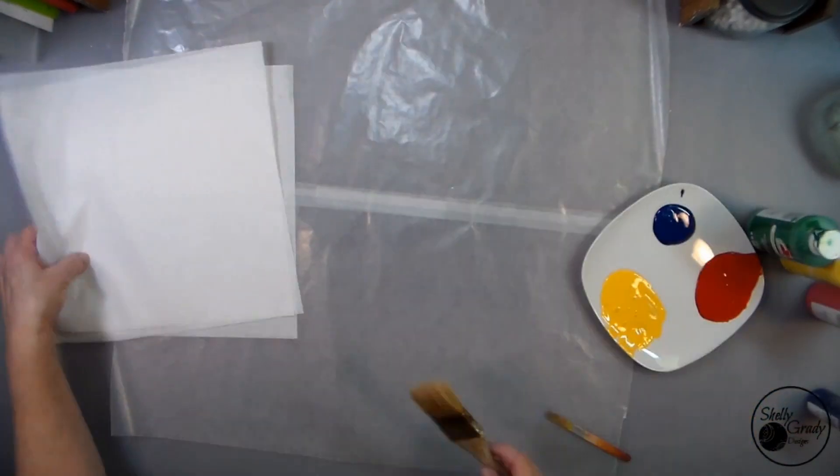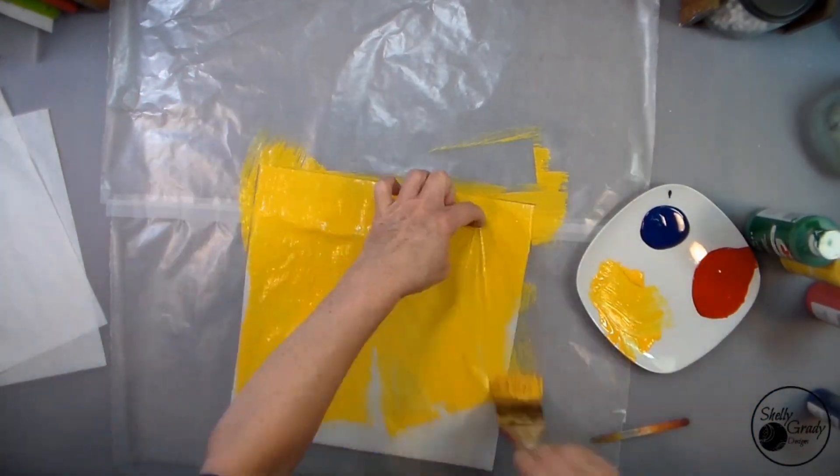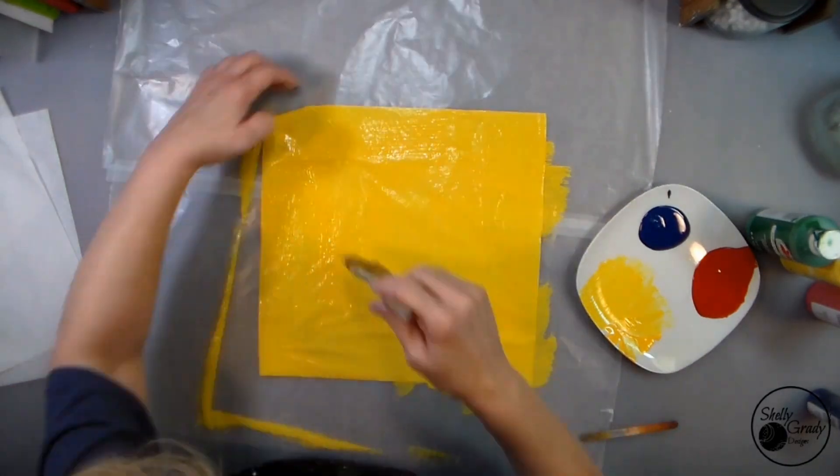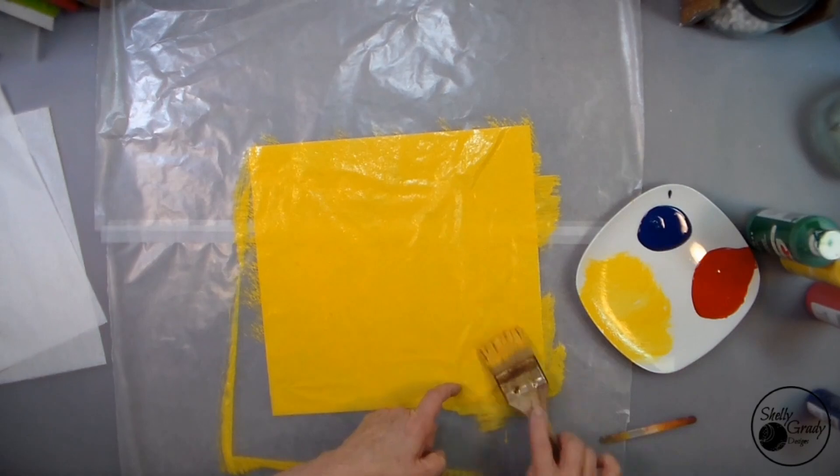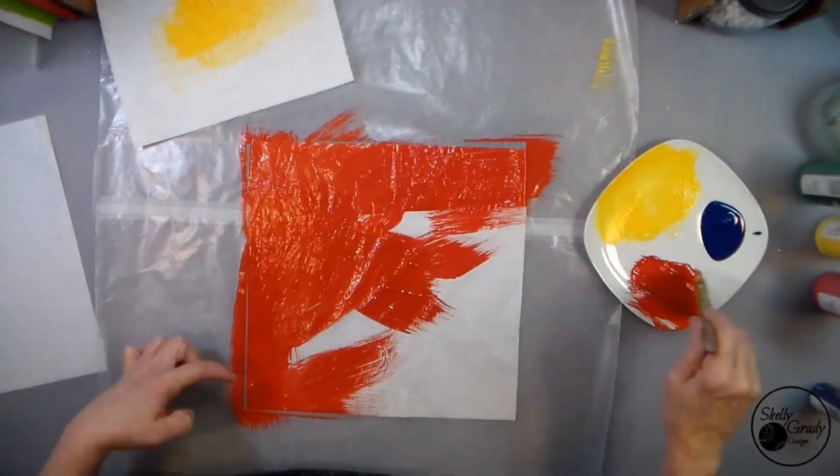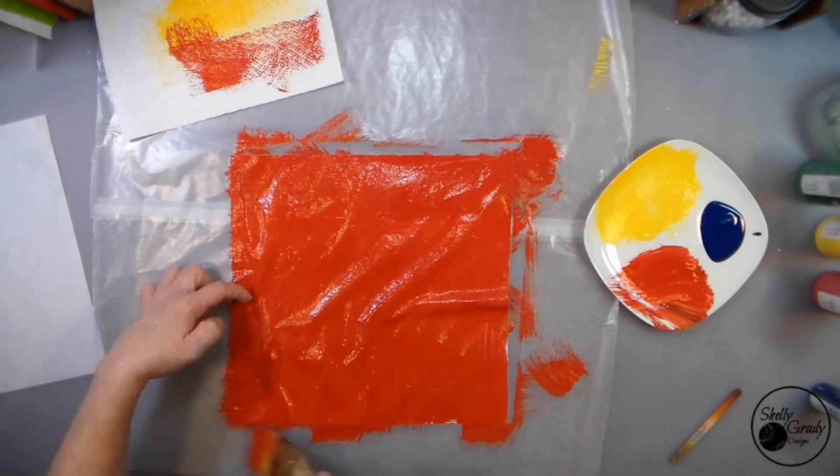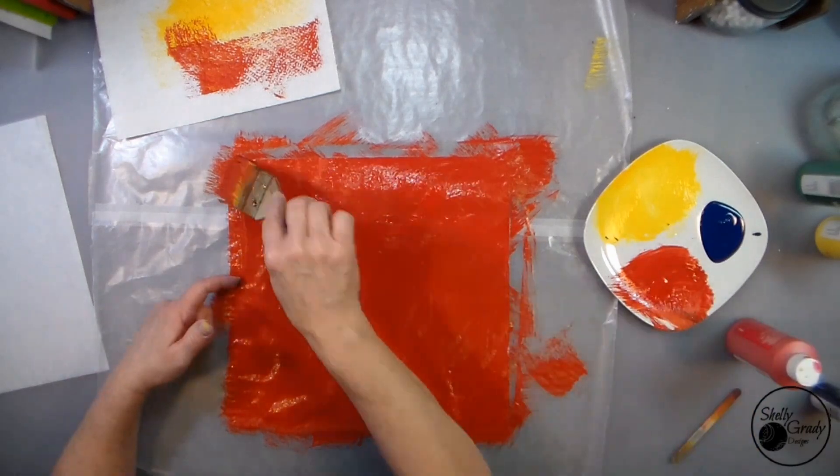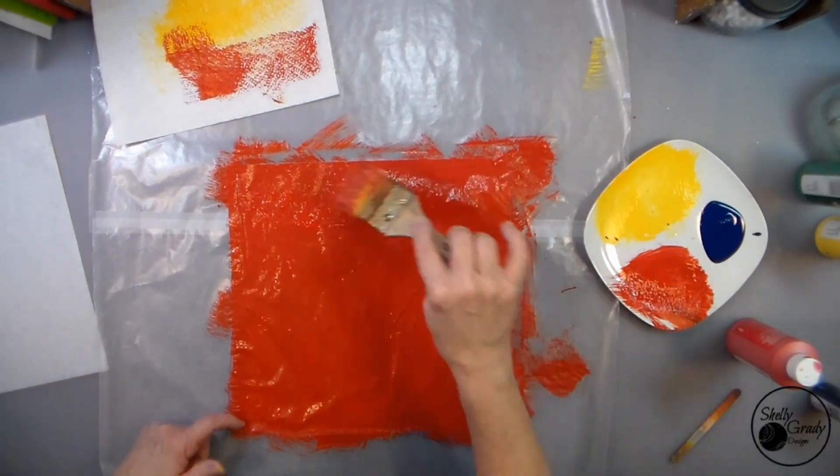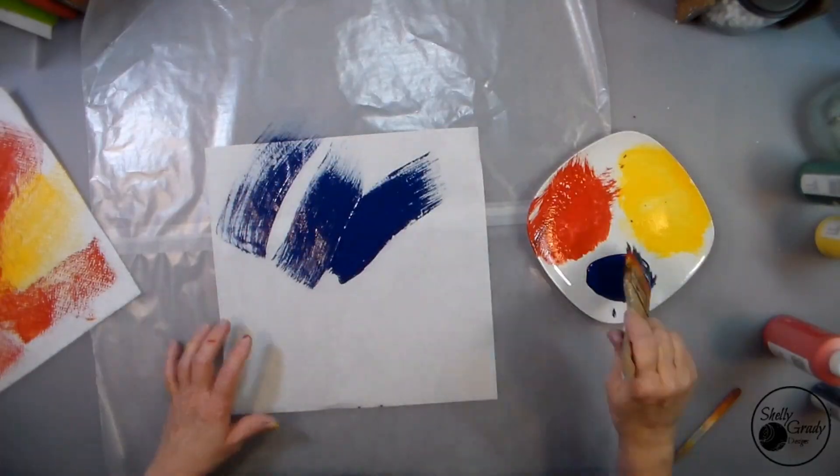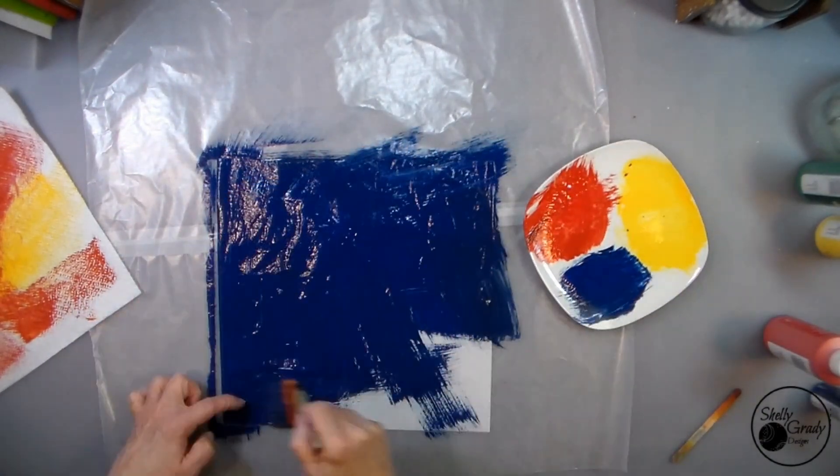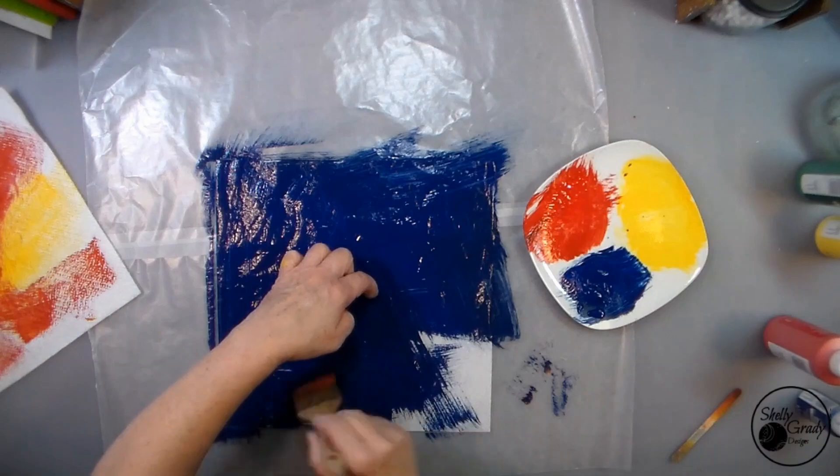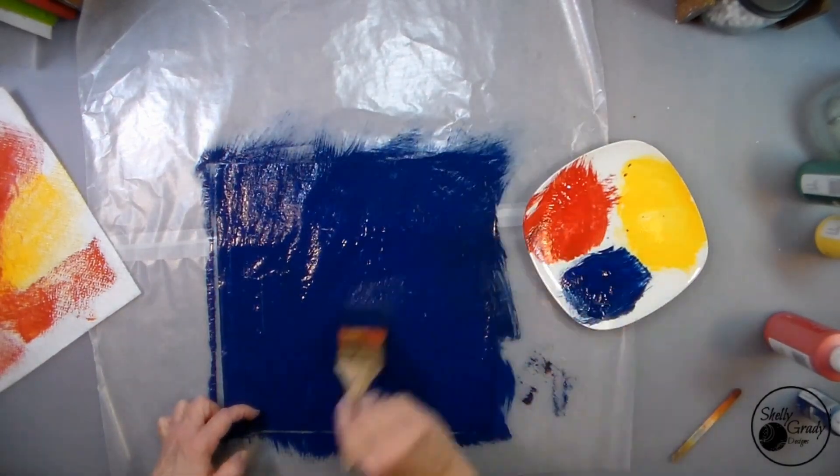I mix a spot of green, dark green, into my red to make a darker red, and then some red into my yellow to make a more golden yellow. Then I'm just putting a nice base coat onto my paper. I brush off some of the excess paint and then go into my red and do the same thing, and then I'll do the same thing with my navy blue.